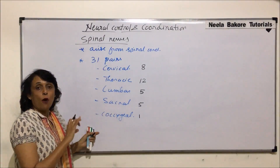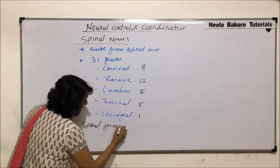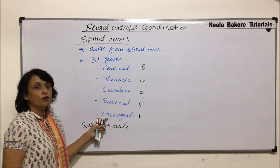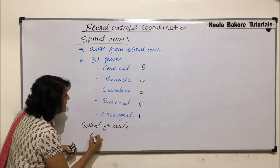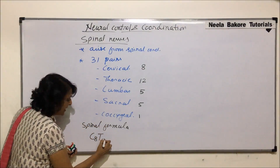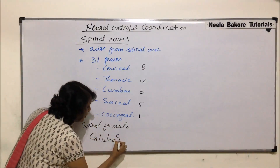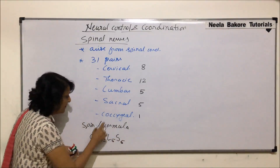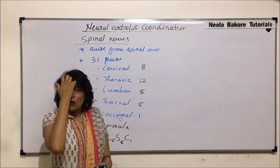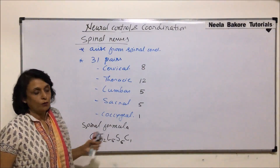When we write the formula, it is known as the spinal formula. The spinal formula is a representation of the same arrangement and numbers. We write it as C for cervical eight, T for thoracic 12, L for lumbar five, S for sacral five, and C for coccygeal one. Similar to dental formulas, we have something called the spinal formula.